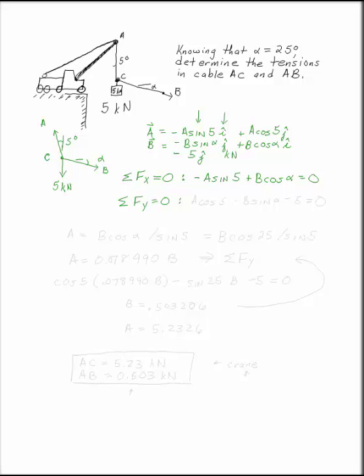Add up the forces in the j direction. You have A cosine 5, minus B sine alpha, minus 5. Don't forget your weight. Equals zero. Those are our two equations and two unknowns.